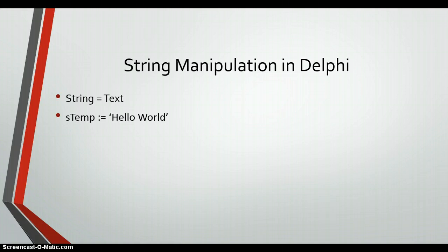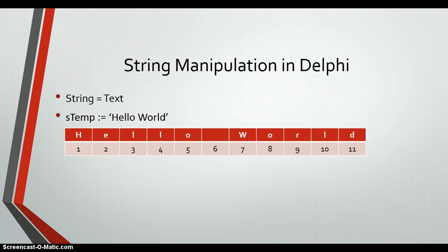We're going to use a string called 'sTemp' — you can call your strings whatever you want, but I tend to start mine with an 's' so I know it's referring to a string. So 'sTemp' has been assigned the value 'Hello World'. What Delphi does is break that string into different blocks, where each block is its own character with its own ASCII value. Position one has 'H', position two has 'e', and so on — this string takes up 11 characters.